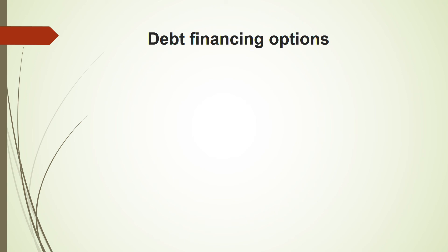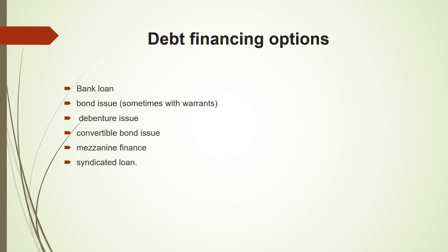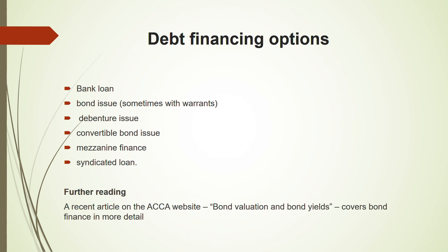Debt financing options include: bank loan, bond issue, debenture issue, convertible bond issue, mezzanine finance, and syndicated loan. For further reading, you can refer to the ACCA website article titled 'Bond Valuation and Bond Yield,' which covers bond finance in more detail. In the exam, the most common financing options that come up are bonds, convertible bond issues, and mezzanine finance. Mezzanine finance has characteristics of both debt and equity.